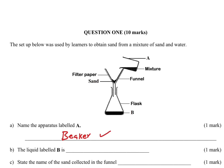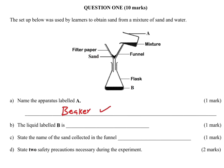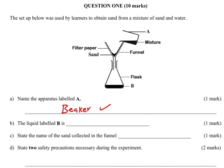So beaker — you score one mark. Part B: the liquid labeled B is the filtered water, but don't say 'filtered water' in an exam — it is called filtrate. So the name is filtrate — you score one mark. Part C: state the name of the sand collected in the funnel. The name of this sand is known as residue — you score one mark.